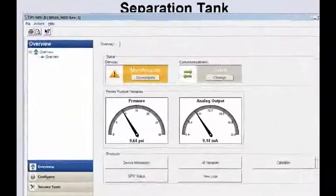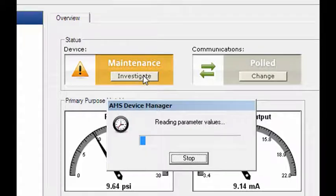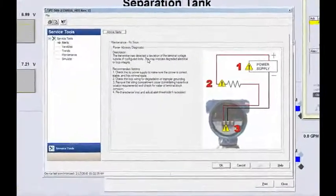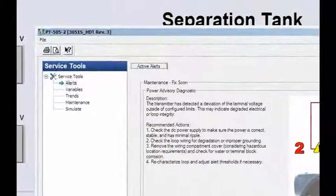This is the AMS device manager window. As you can see, the device status has changed from good to maintenance. Clicking on investigate displays the power advisory diagnostic description and recommended actions.